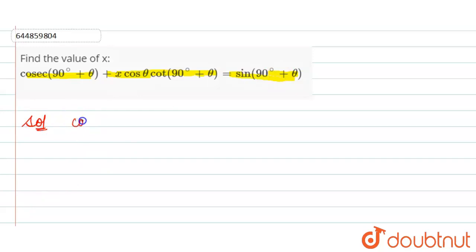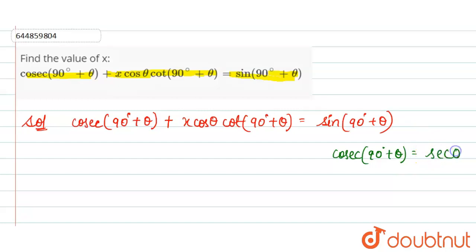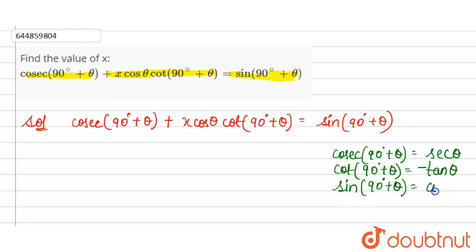The given expression is cos(90° + θ) + x · cos θ · cot(90° + θ) = sin(90° + θ). We know that cos(90° + θ) = −sec θ, cot(90° + θ) = −tan θ, and sin(90° + θ) = cos θ.